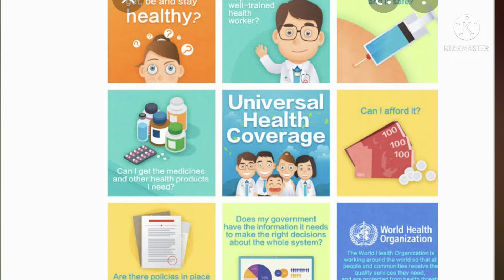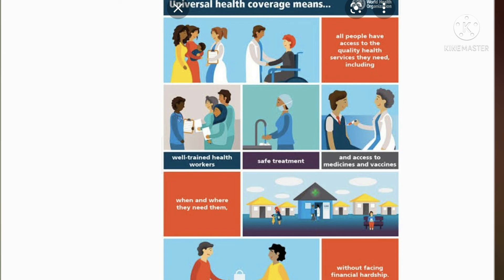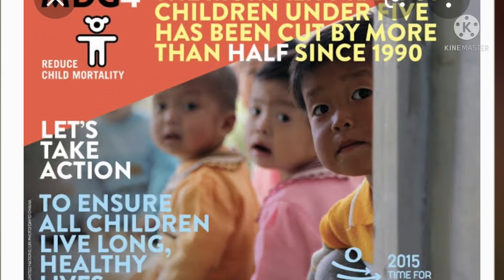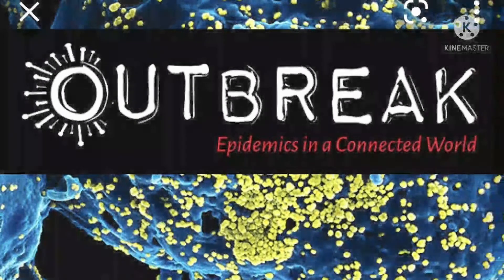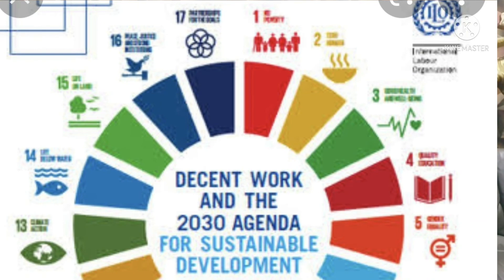SDG 3 aims to achieve universal health coverage that seeks equitable access to healthcare services for all men and women. It proposes to end the preventable death of newborns, infants and children under 5 years, reduce child mortality, and end epidemics. Good health is essential to sustainable development and the 2030 agenda.